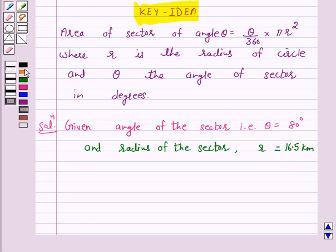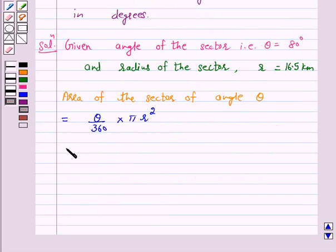Now according to our key idea, the area of this sector of angle theta is equal to theta upon 360 into pi r square. Here theta is 80 degrees, so 80 upon 360, take pi equal to 3.14 into r square, that is 16.5 into 16.5 kilometer square.